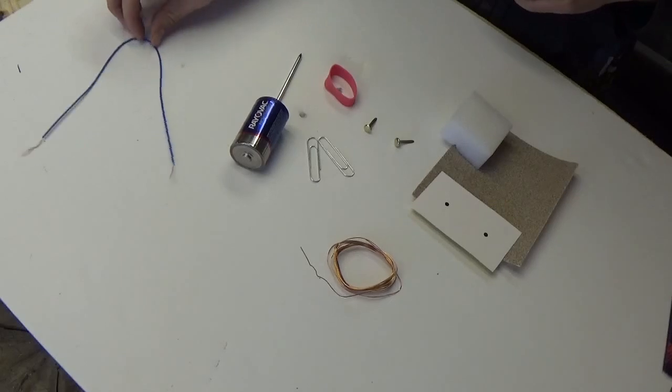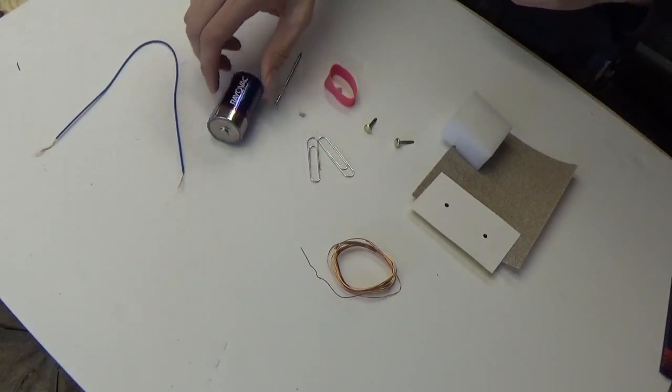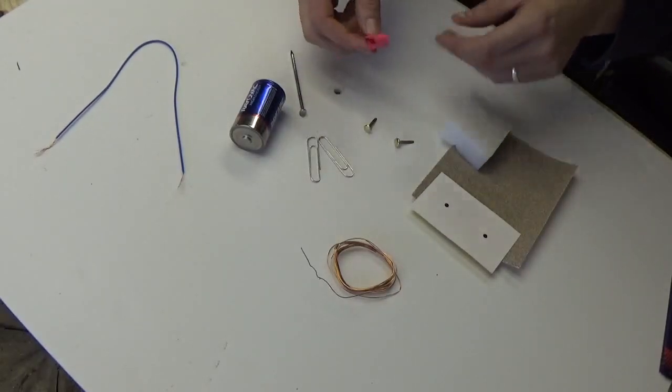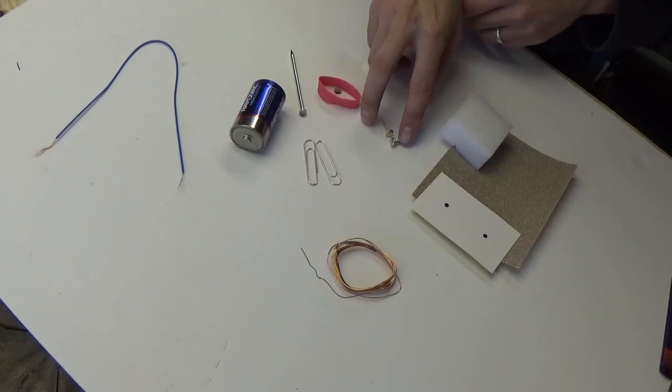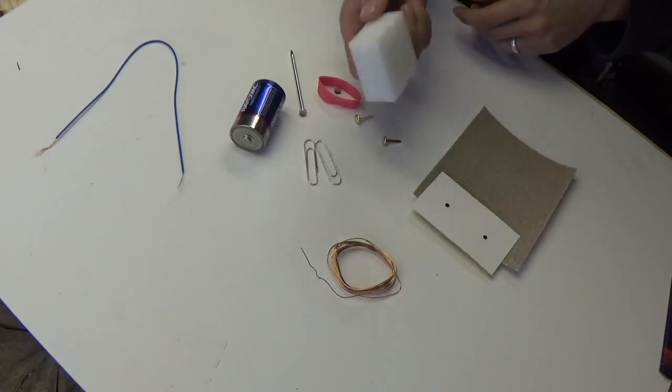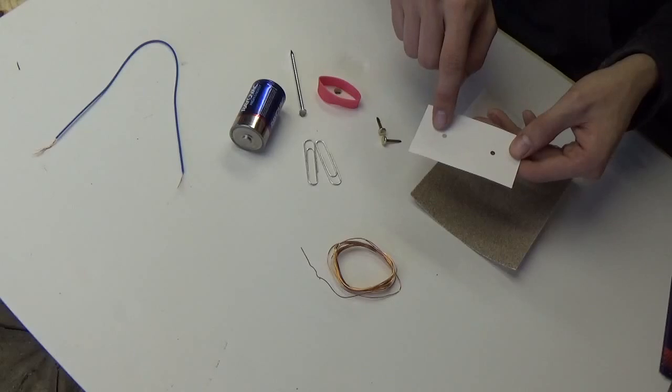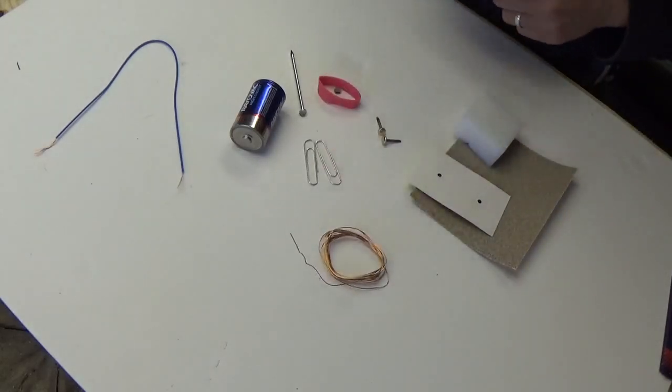What you need is some wire with the end stripped on it, a D-cell battery, a 16D nail, a thick rubber band, small rubber band, two paper clips, paper fasteners, a piece of foam, sandpaper, a piece of paper or cardboard with two holes in it for a switchboard, and then magnet wire. So let's get to building.